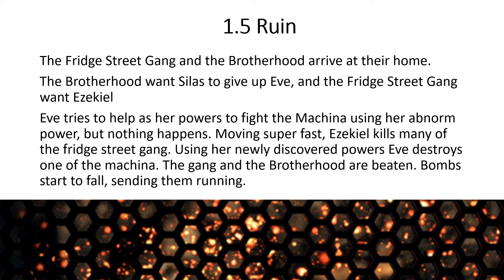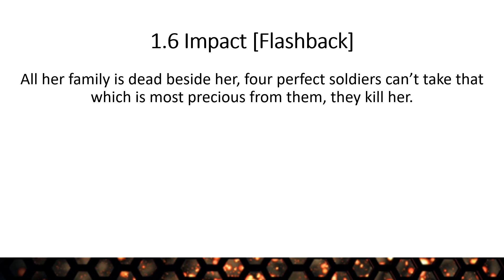There's a big battle. Eve tries to use her powers to destroy a machina, but nothing happens. Then Ezekiel jumps into action and starts fighting, killing, hitting, and shooting all the people who came to collect Eve — defending her at super speed. The gang and Brotherhood are beaten, Eve uses her powers effectively at last and destroys one of the machina. Then bombs start to fall and both groups flee.